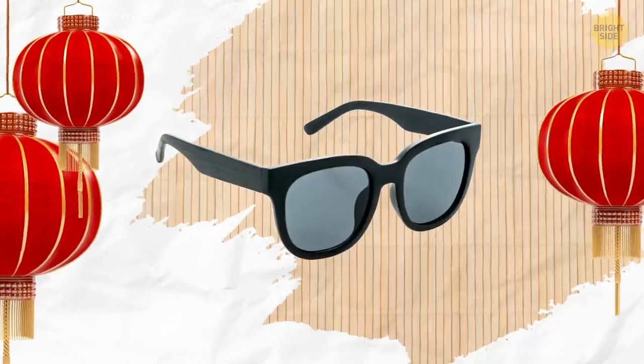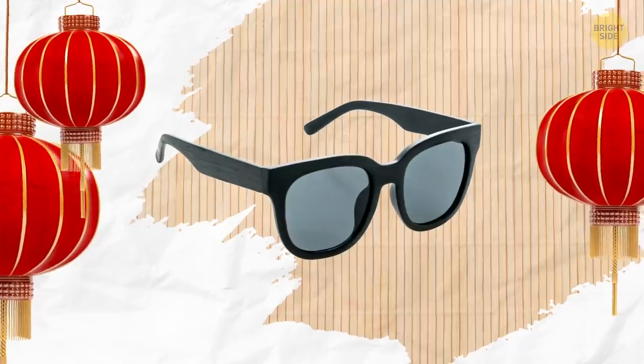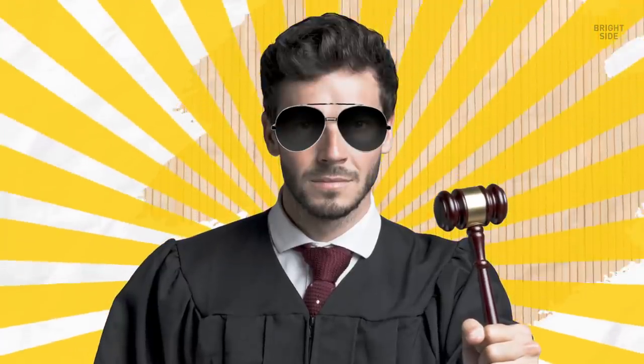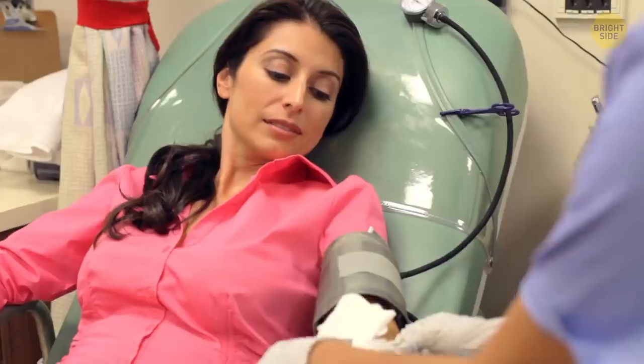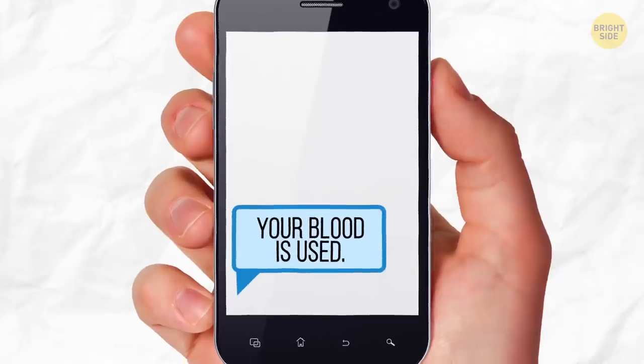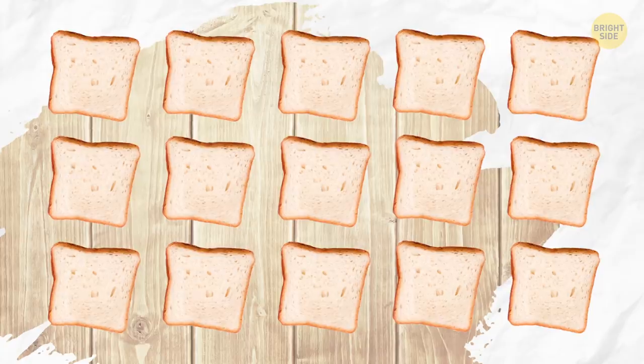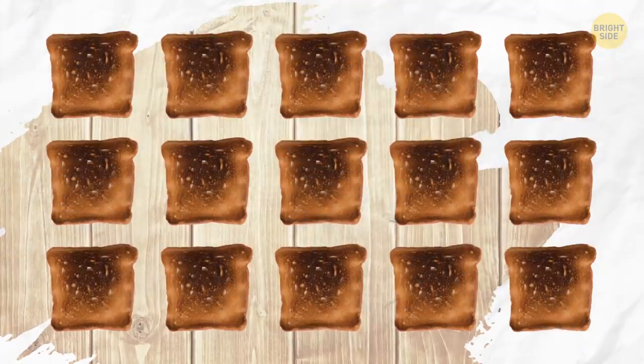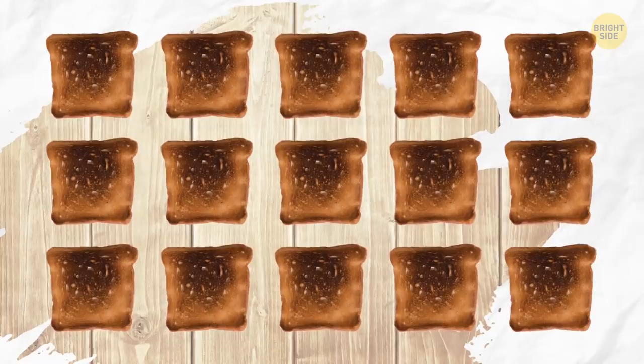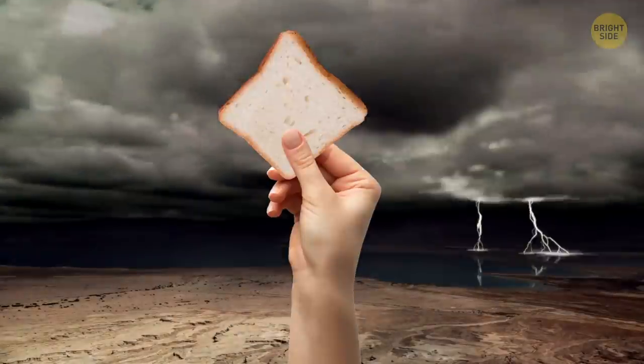Sunglasses were invented in China, but for a different purpose: to hide judges' facial expressions in court. If you donate blood in Sweden, you'll get an SMS notification if your blood is being used. A single lightning strike can toast 100,000 slices of bread. Let's try it, huh?